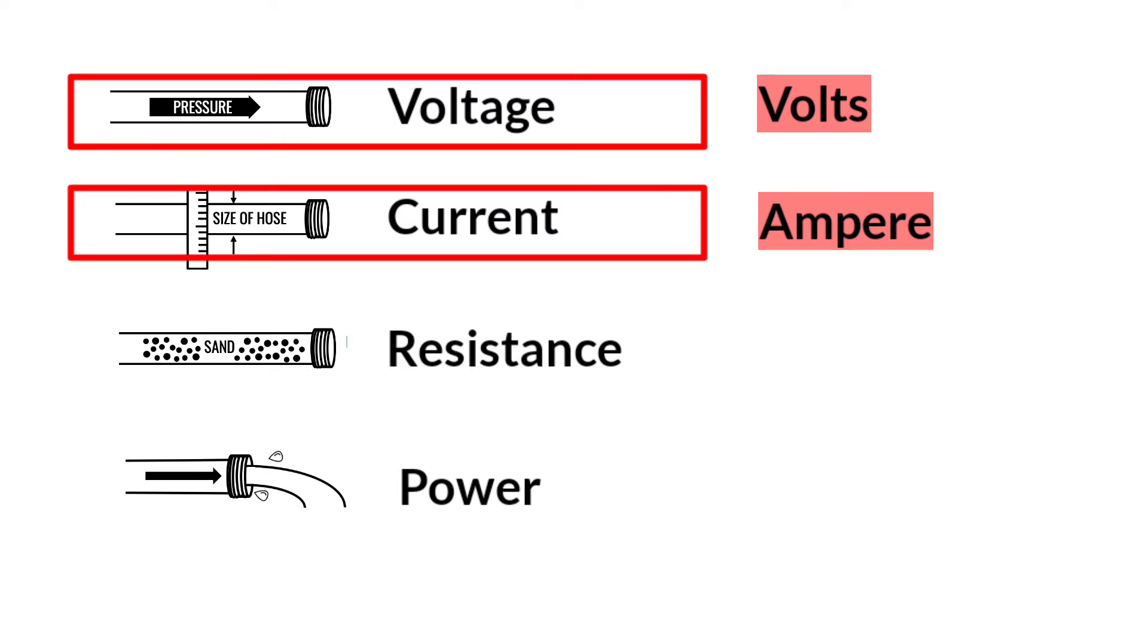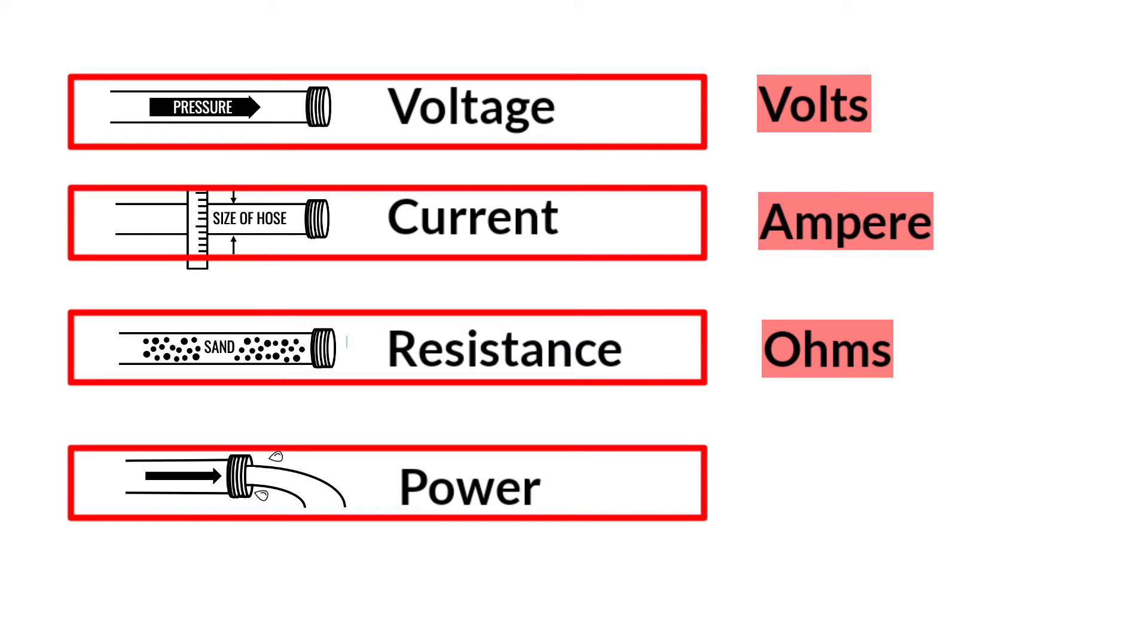Resistance is like sand in the hose that slows down the water flow. It is measured in ohms. Power is like the volume of water that is flowing from the hose. Given a specific pressure and diameter, electric power is measured in watts.